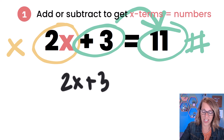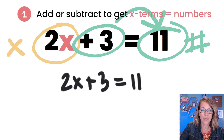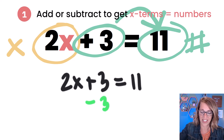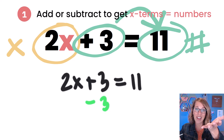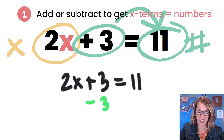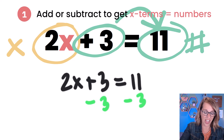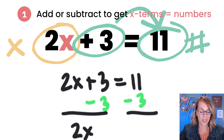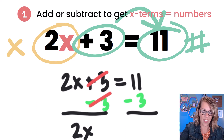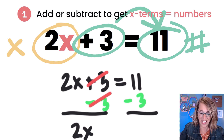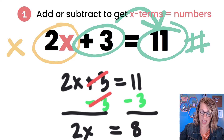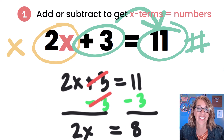So I've got 2x plus 3 is equal to 11. To move the 3 to the other side, I need to undo it. It's being added, so I'm going to subtract that. And I'm going to keep this balanced — whatever I do to one side, I've got to do to the other. So let me subtract 3 from the other side as well. The 2x has nothing to combine with, so the 2x just comes down. 3 minus 3 is 0, so those are gone. And on the other side, 11 minus 3 is equal to 8. We are ready for the next step.